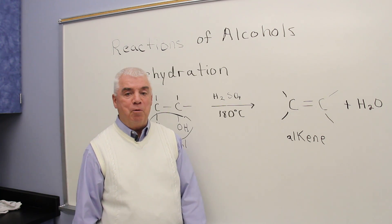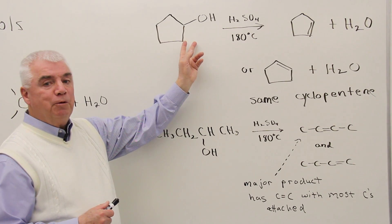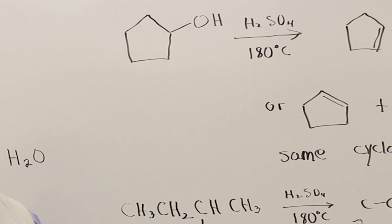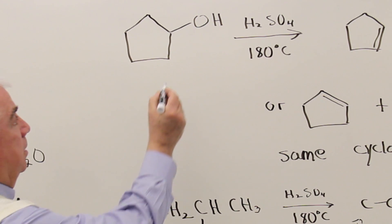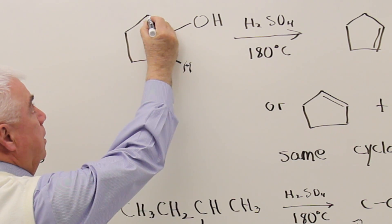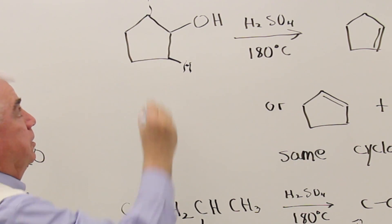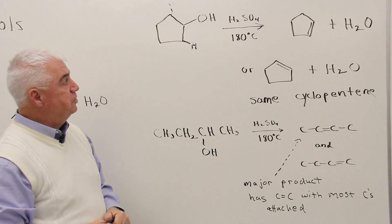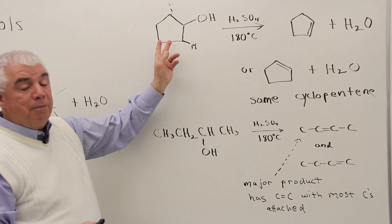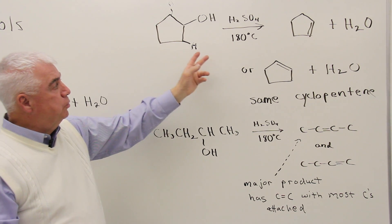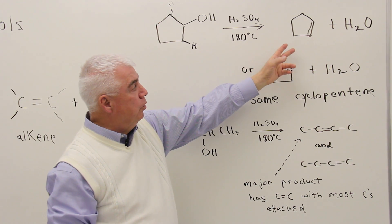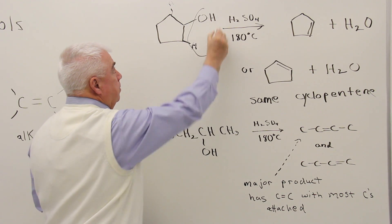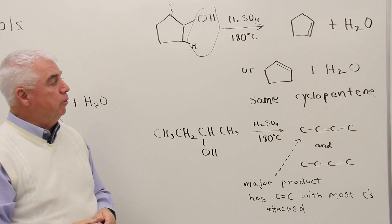Let's look at an example. When the OH is removed from the structure of an alcohol, it takes with it a hydrogen on a neighboring carbon — that means this hydrogen or this hydrogen up here — and not a hydrogen that's on the same carbon as the OH. So typically there are two possible products. As we remove that water molecule, we could form the double bond there.